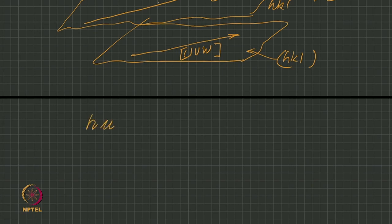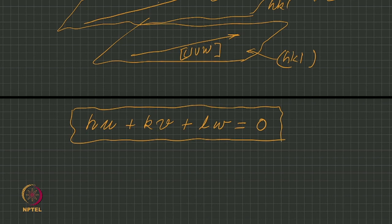That says that hu + kv + lw = 0. This is a very important law, very important for crystallographic calculation and crystallographic interpretation. Many cases you will like to check whether the direction is lying in the plane or not.